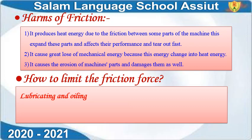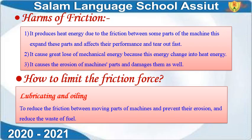To reduce the friction: reduce the effect of friction between internal parts of the car engine. If the oil runs out, a big problem occurs and the engine will seize. It reduces the friction between moving parts of the machine and prevents erosion and reduces the waste of fuel. Oiling or lubricating creates a thin layer between mechanical parts, and this layer reduces the friction between them.